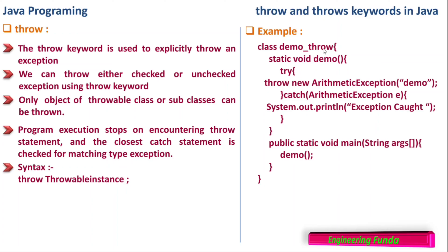Let us see an example. Here is a class demo throw. There is a method named demo with return type void and static. Inside the try block, we have throw new ArithmeticException("demo"). This creates an exception object of the ArithmeticException class using the new keyword, with the associated message demo, and this newly created exception is thrown using the throw keyword.